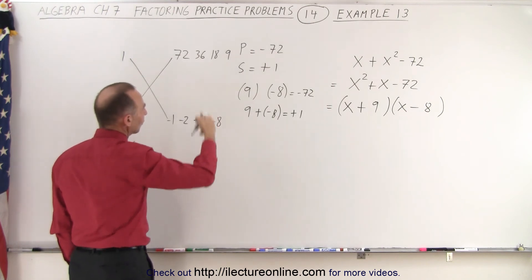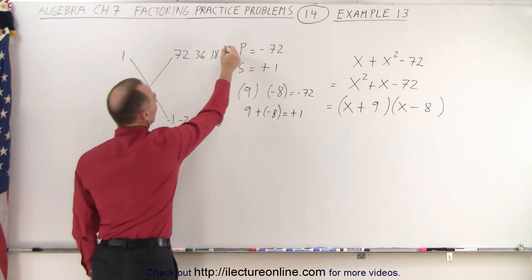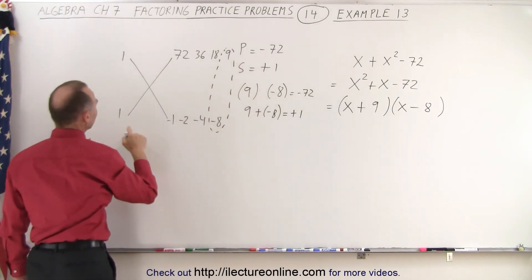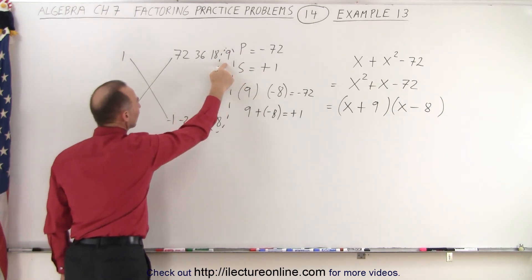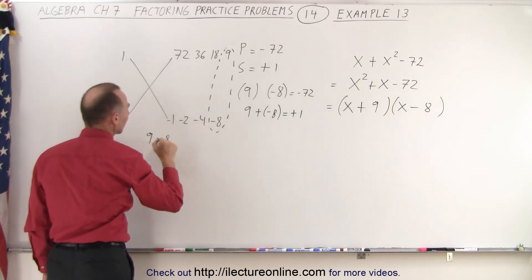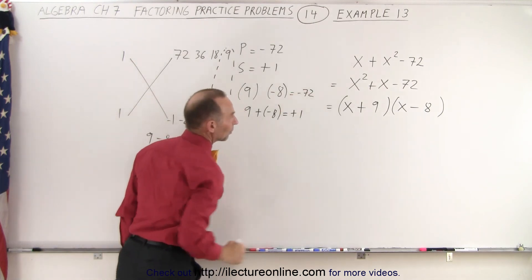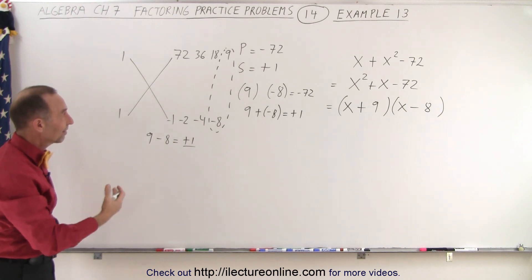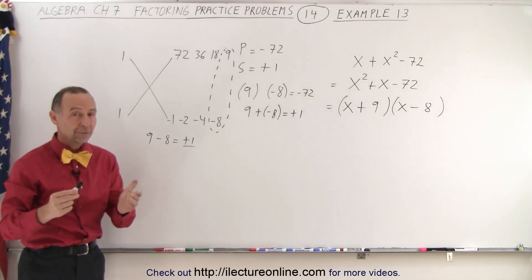But then I realize when I add the two together, I get plus 1. So the most likely candidate would be this. And let's see if that's indeed the case. 1 times 9 gives me 9. 1 times negative 8 gives me negative 8. When I add it together, I get plus 1. And that means I got the middle term. So you can see the FOIL method gives you the exact same way of coming to the right answer. And that is how it's done.